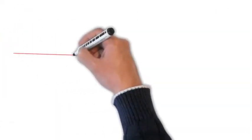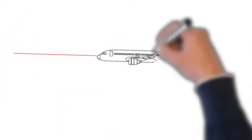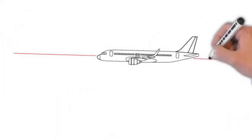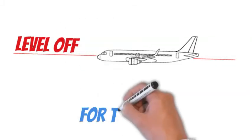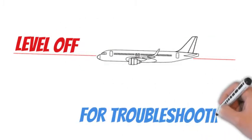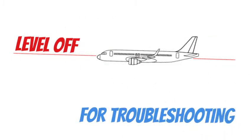Flight path stabilization: If the flight crew has applied the memory items, then the flight crew must level off the aircraft to stabilize the flight path. The GPS altitude can be used to confirm that the aircraft is maintaining level flight.